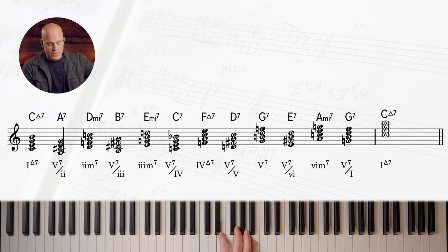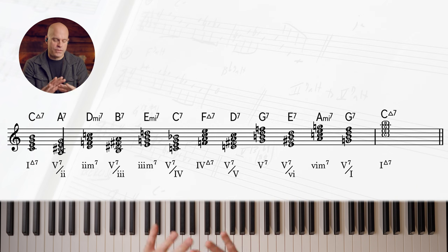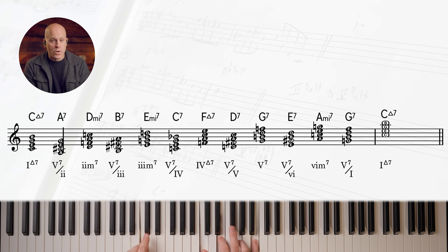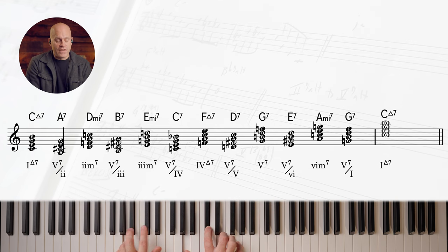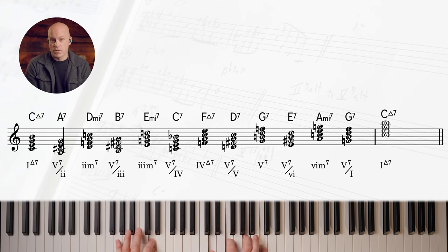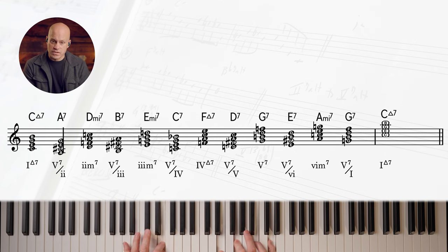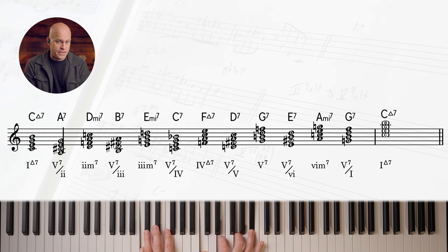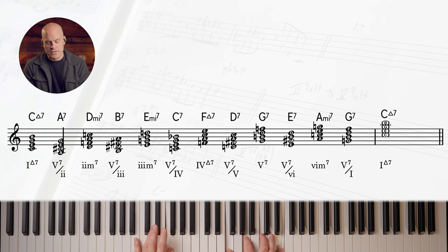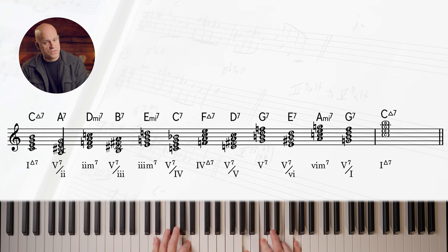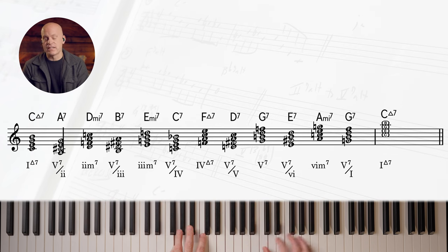Let's do this all in one action so you can see it, and I'm going to say it with the roman numerals. One major seven, five seven of the two resolves to two minor seven, five seven of the three resolves the three minor seven, five seven of the four resolves to the four major seven, five of the five resolves to the five dominant, five of the six resolves to the six, and then the five resolves back to the tonic.